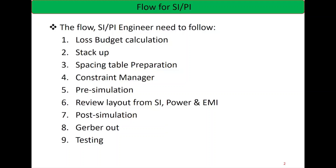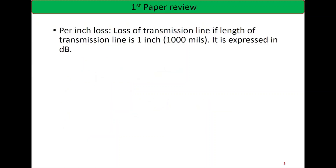There are many high-speed signal tests — DAC testing, TP1A testing — which will be covered in future videos. Next, I will briefly discuss per inch loss. Per inch loss means the loss of a transmission line per inch. One inch is about 1000 mils, and loss is expressed in dB per inch.